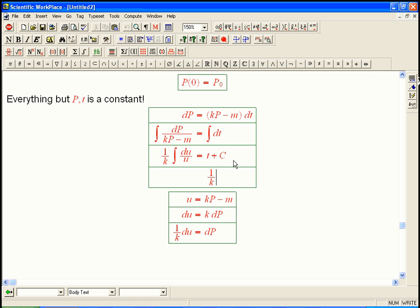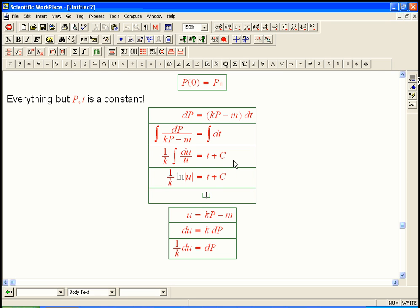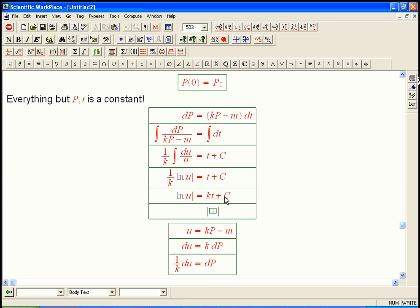That is 1 over k ln absolute u equals t plus C. Or, now start stripping stuff off, ln of absolute u equals kt. And we could call it kC, but you know what? C, nothing else, not t, not k, not m, not anything. You can't play this kind of magical game with anything else. But C just means add whatever you feel like. And if I say add whatever you feel like and then multiply it by k, well, that's kind of silly. It's just still add whatever I feel like. And so we can just call that plus C.